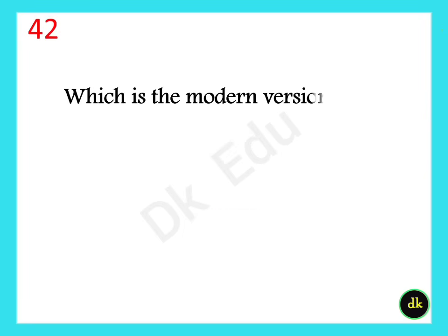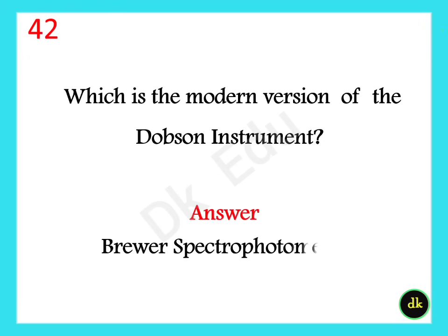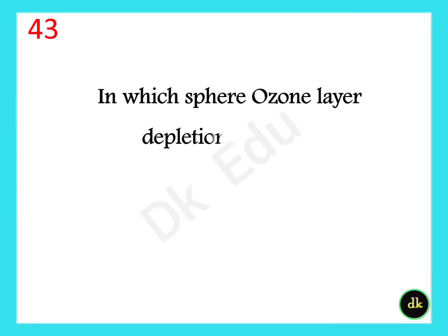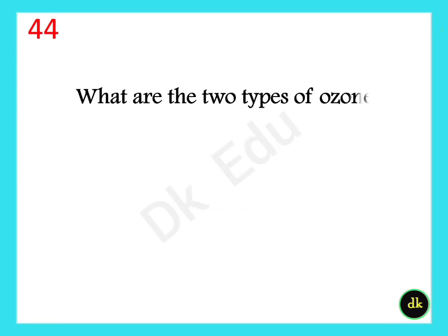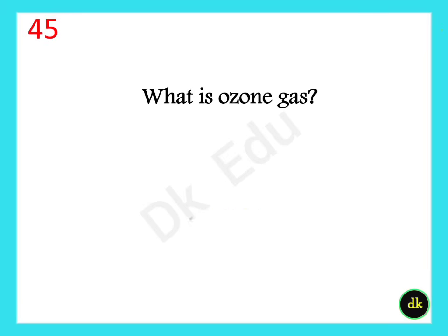Which is the modern version of the Dobson instrument? The Brewer Spectrophotometer. In which sphere is ozone layer depletion found? The stratosphere. What are the two types of ozone? Good ozone and bad ozone. What is ozone gas? O3.